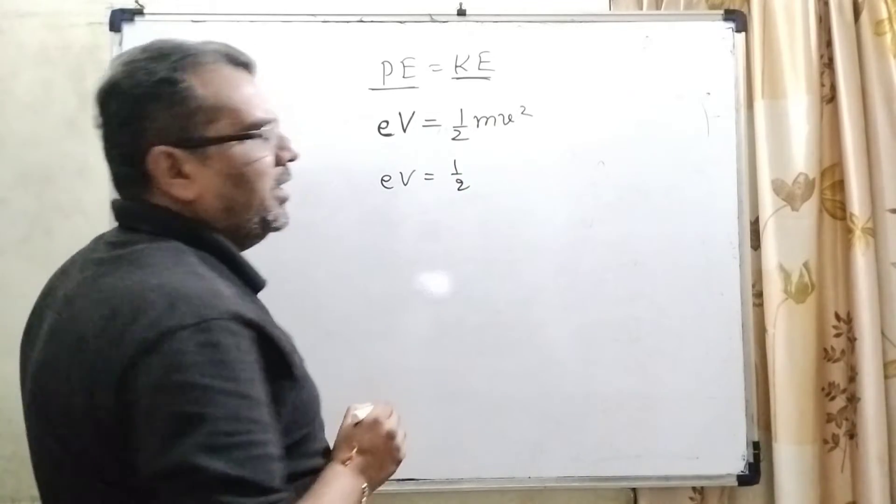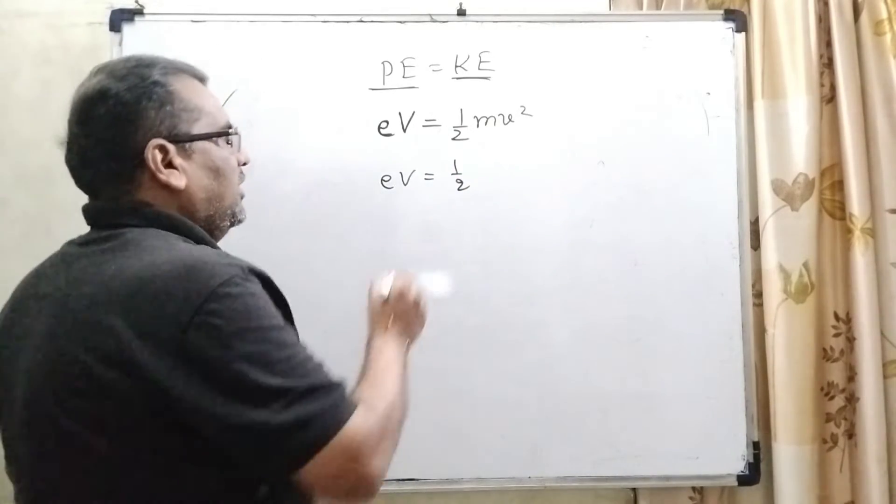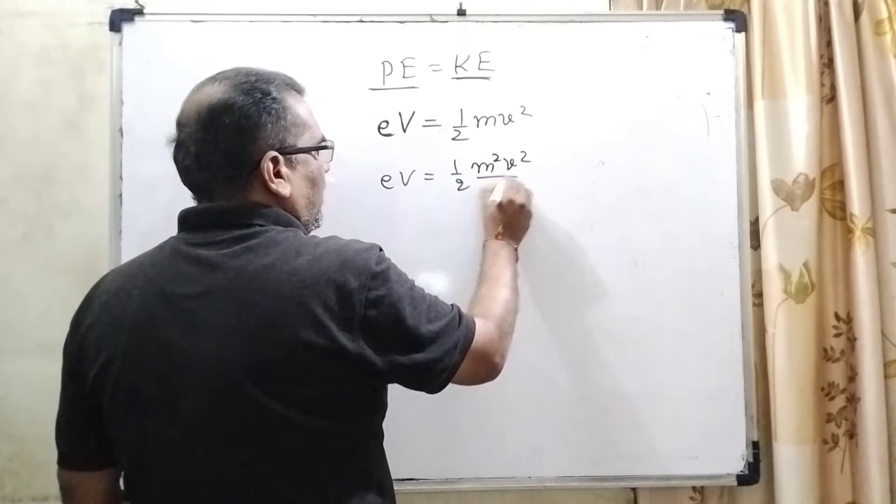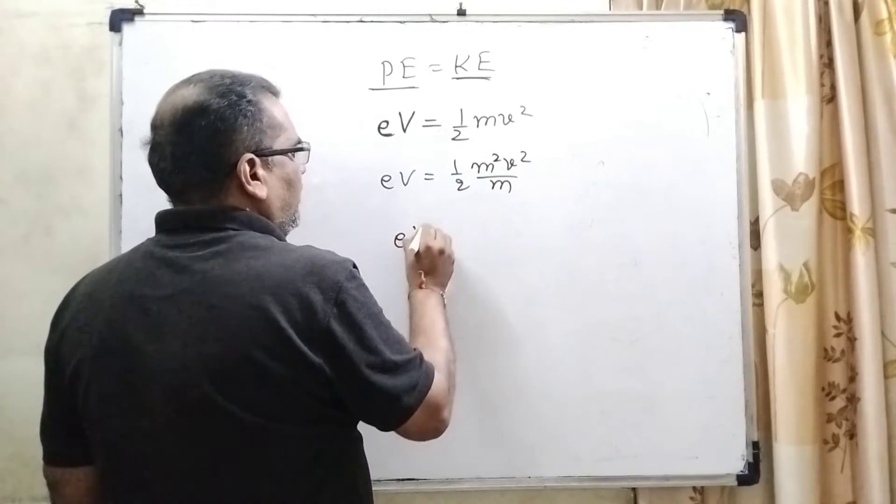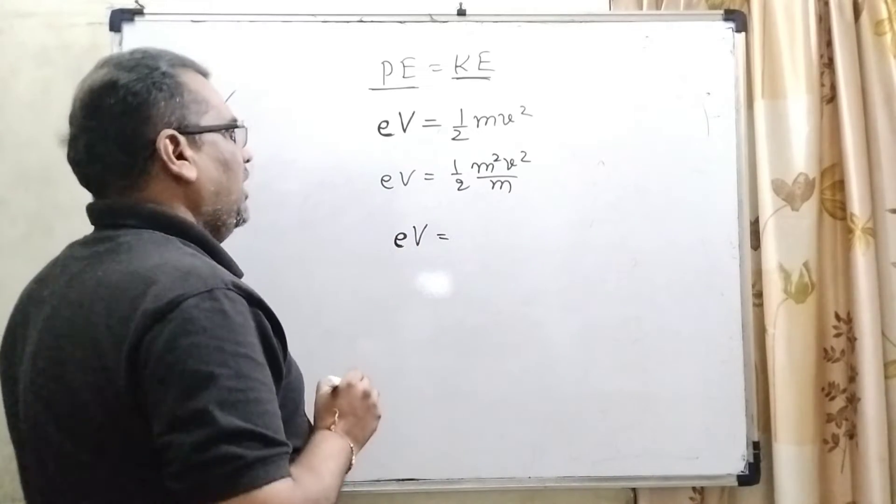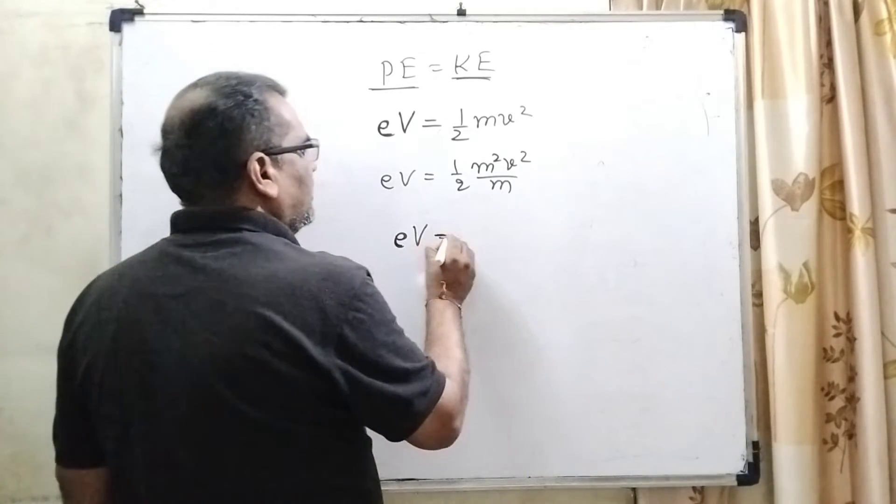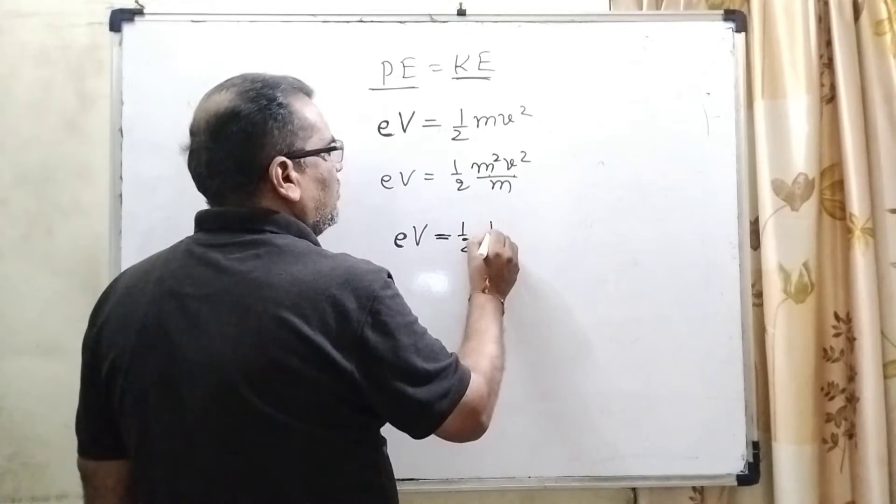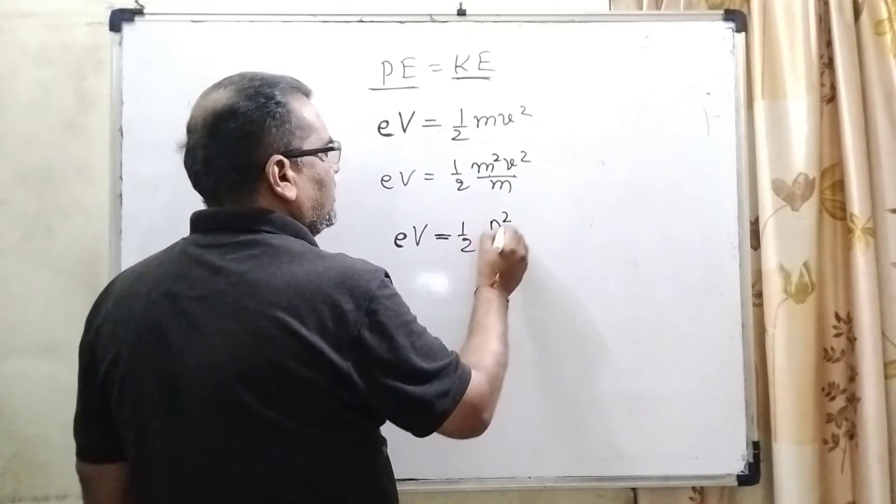Multiplying numerator and denominator by m on the right side, it becomes m²v²/m. eV, where e is the electron charge and V is the potential difference, equals ½. Here mv can be written as momentum p, so it can be written as p²/m.